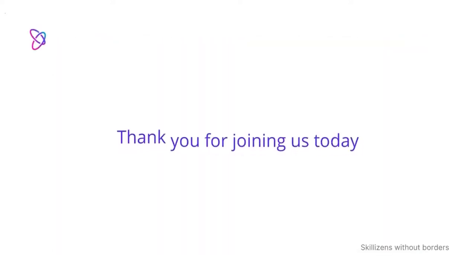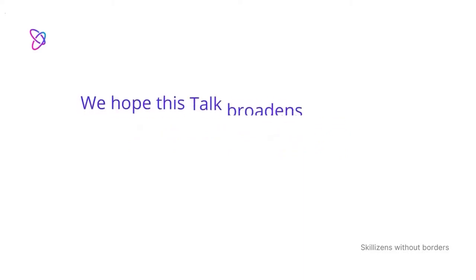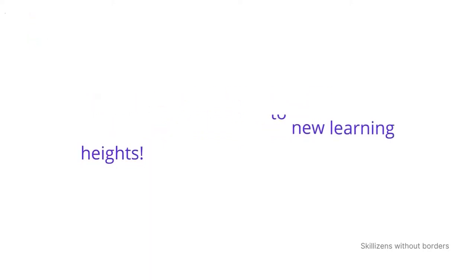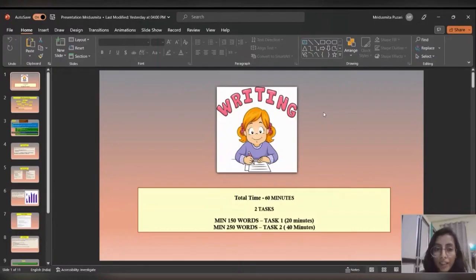Thank you for joining us today. We hope this talk broadens your horizons and takes you to new learning heights. For more details about the writing section, I would like to share my screen. So here you can check the overview of the writing section. The time is 60 minutes and you need to do two tasks. Minimum 150 words is the word count for task one, for which you need to give 20 minutes of your total time.